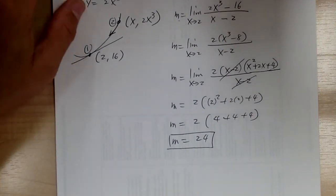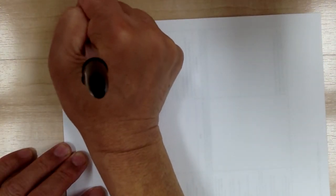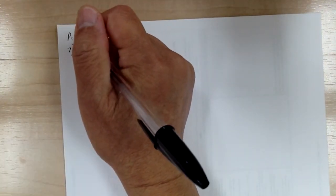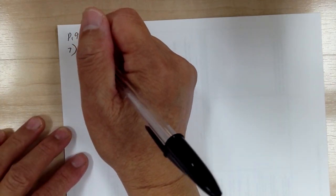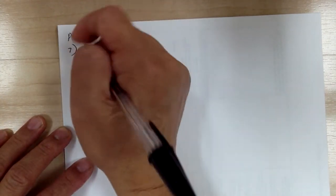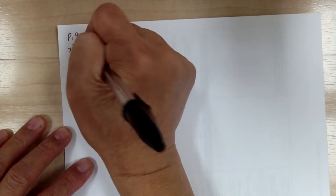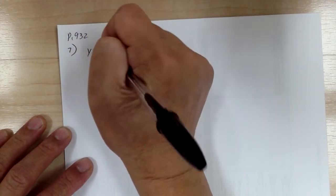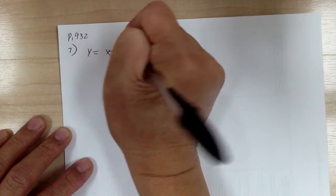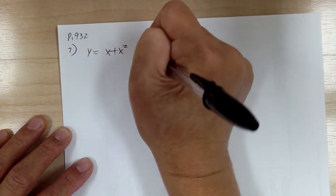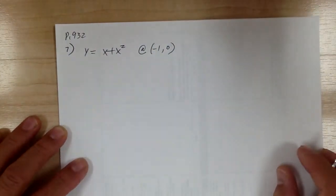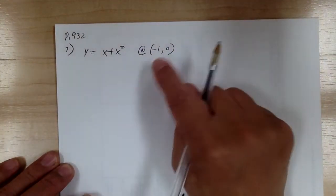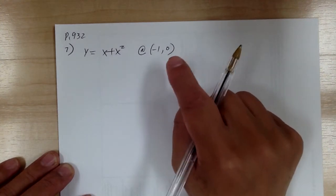Let's go to number 7. This one you need to find the equation of the tangent line. You have y equal to x plus x squared at negative 1, 0. This one you have to do more steps, but you go through the same steps. First you need to find the slope.